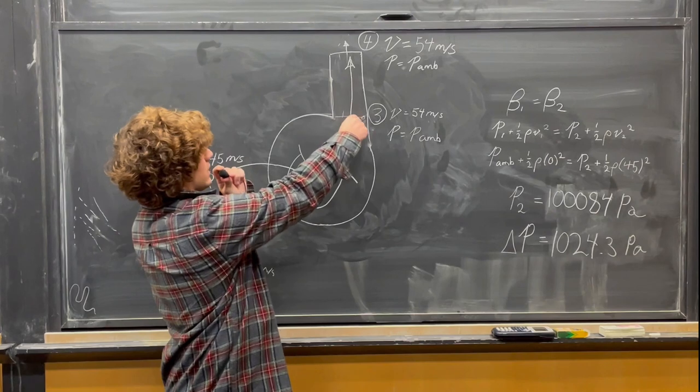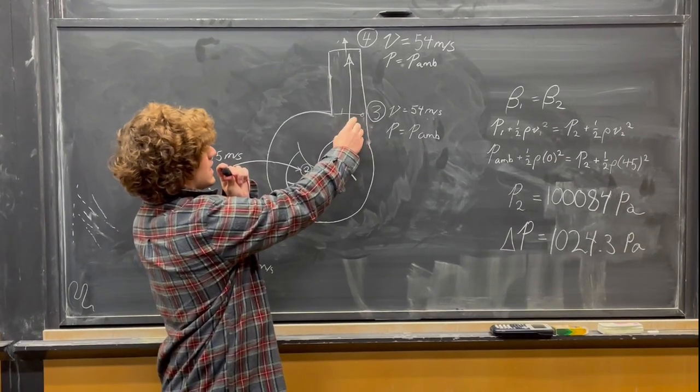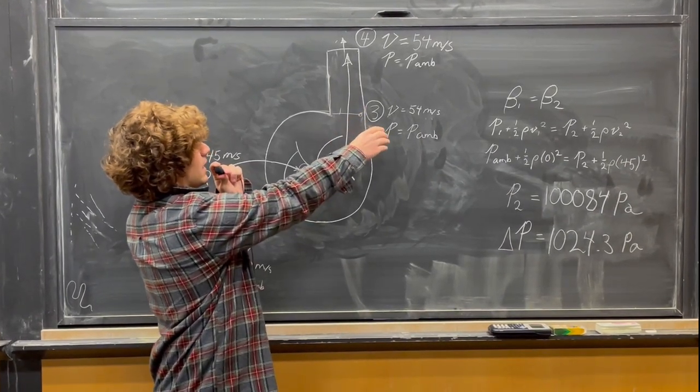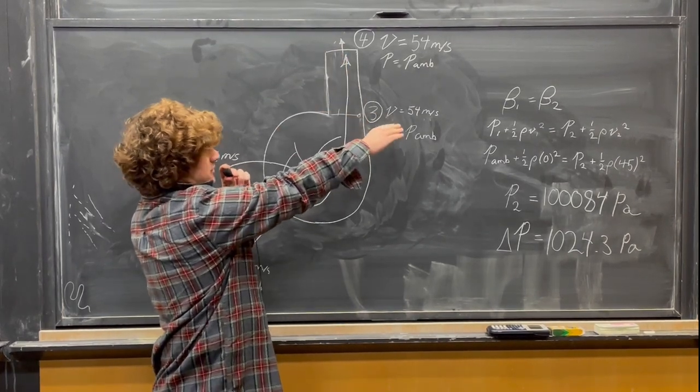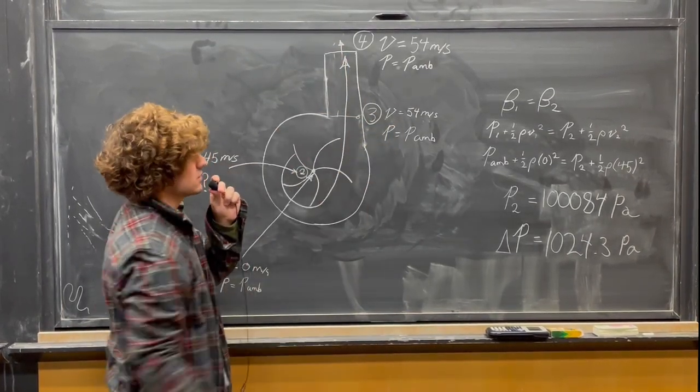We can work our way backwards to three, which is also just inside the impeller. Since there was no change from here to here, it must be 54 meters per second, and pressure is still ambient.